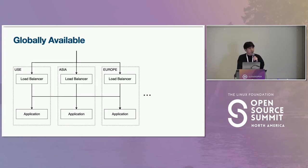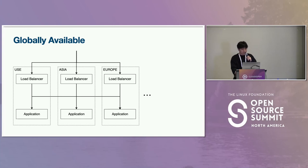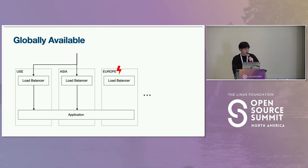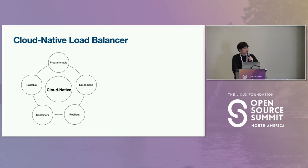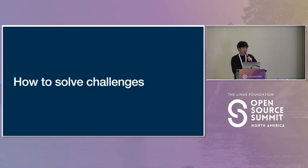The fourth challenge is global availability. If a user's application is deployed internationally, routing based on the locality of the application should be considered — traffic may need to be routed only to the same region, and if some region or IDC experiences a failure, failover to another region must be available. Finally, as our load balancer system evolves, all data must be easily migrated even without user intervention. Our task was to develop the cloud-native load balancer, which we call Elastic Load Balancer — or ELB.